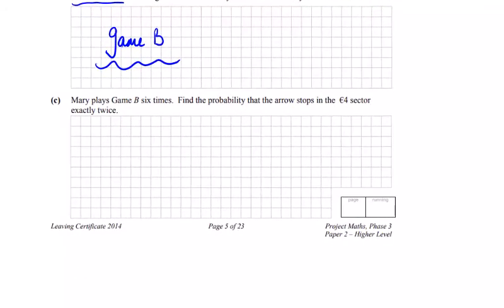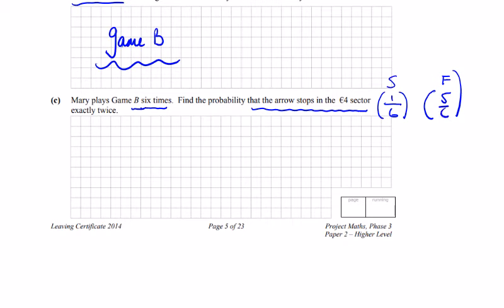Part C: Mary plays Game B six times. Find the probability that the arrow stops in the fourth sector. Well, it's 1 over 6 is the probability of success. The probability of failure is 5 over 6.